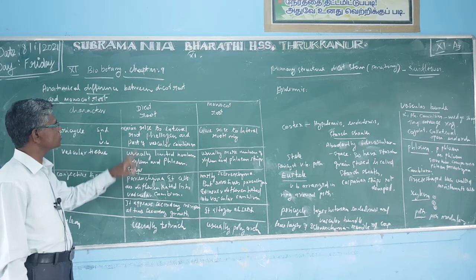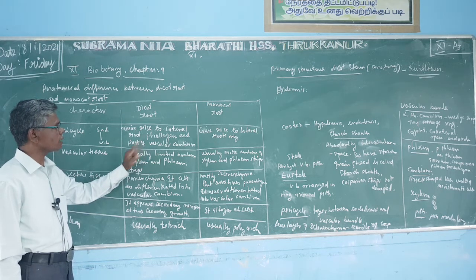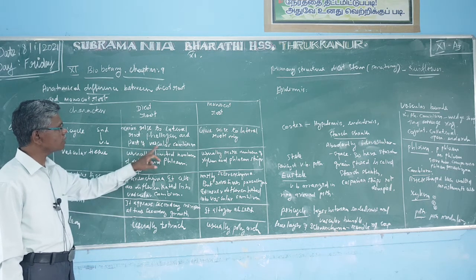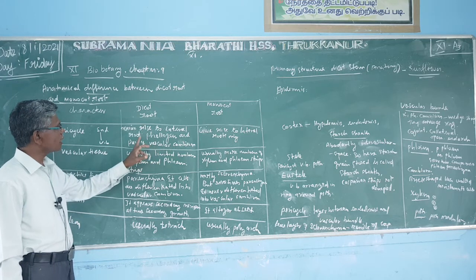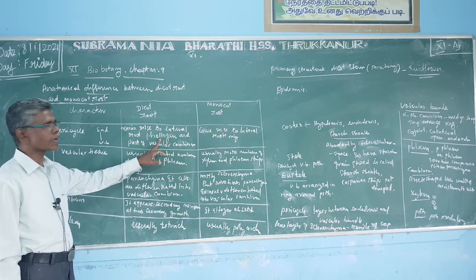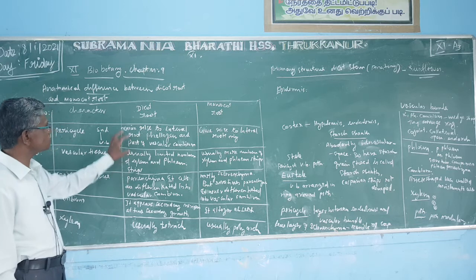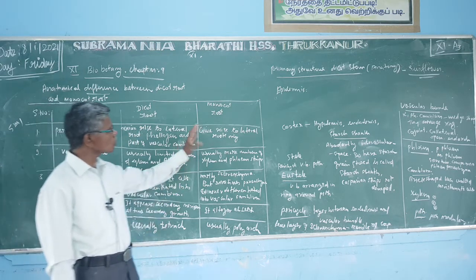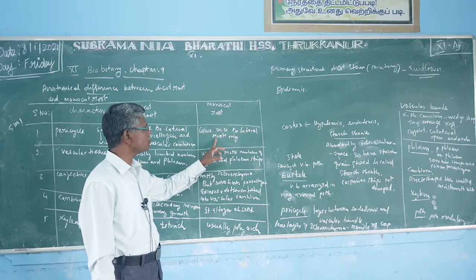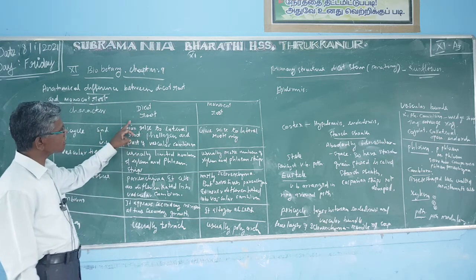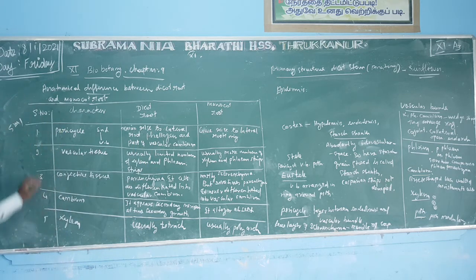In the dicot root, the pericycle gives rise to lateral roots and also gives rise to the other part of the vascular cambium.